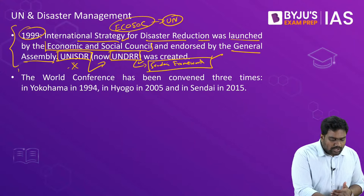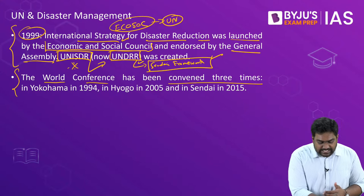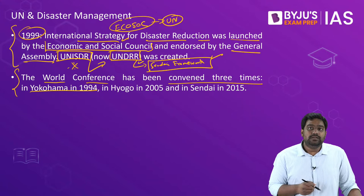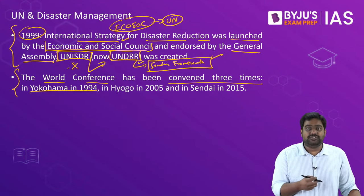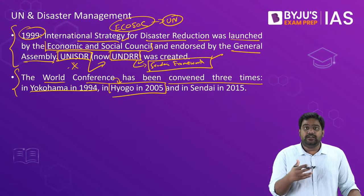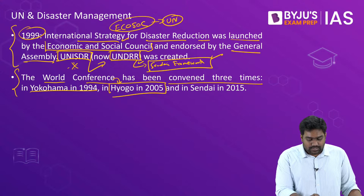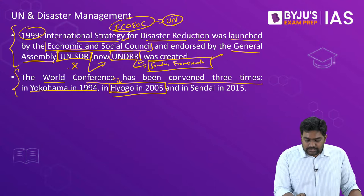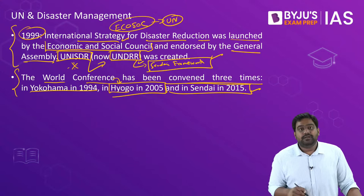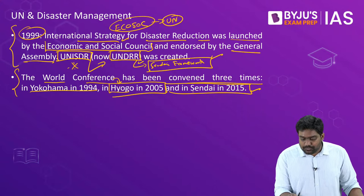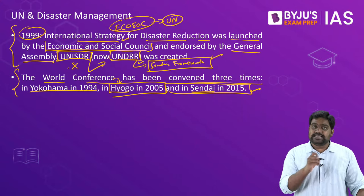The first global conference on disaster management had taken place at Yokohama in 1994, which led to the Yokohama Strategy. A decade later, another conference took place — the second UN conference on disasters at Hyogo — which brought out the Hyogo Framework. And finally, in 2015, the Sendai conference was held, the third conference on disaster management, which brought out the Sendai Framework. These are essentially the three major global frameworks with regard to disaster management.